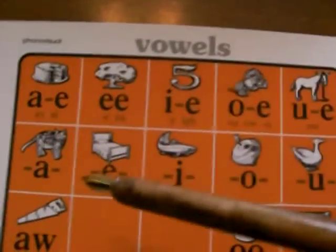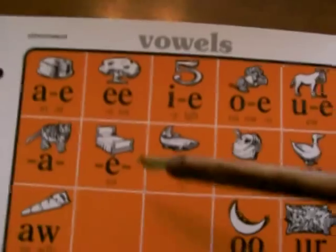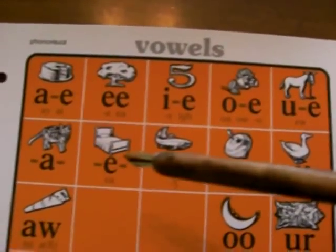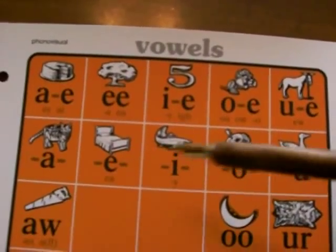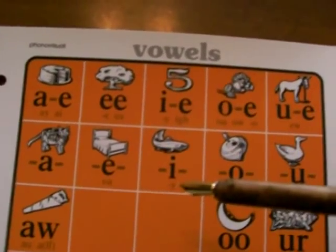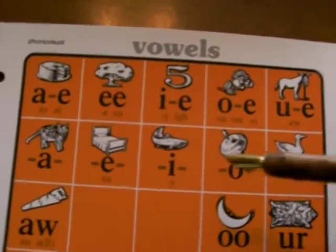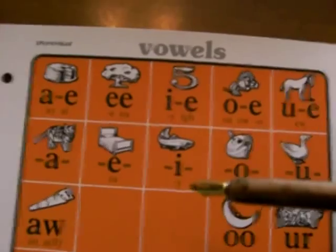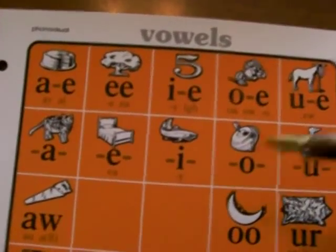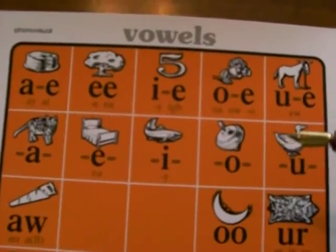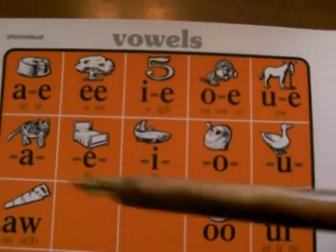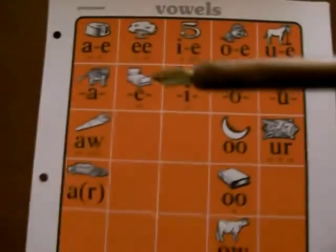Then we have the short vowels: A, E, I, O, U — cat (A), bed (E), fish (I), and the Y sound as in baby. We usually say baby with an E sound, but the chart treats it as a short Y sound. Top — the short O (AH sound), and duck — the short U (UH sound). So: A, E, I, AH, UH.